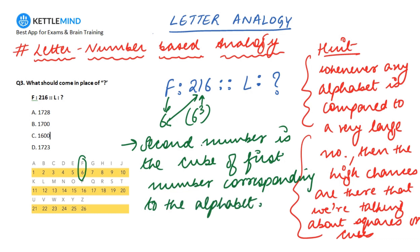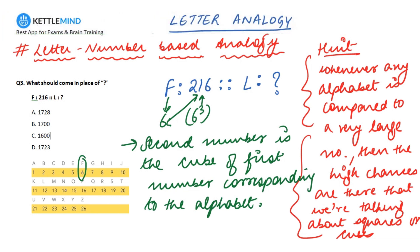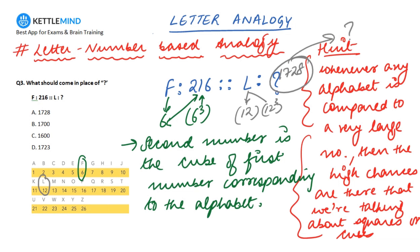Talking on the same lines, to evaluate the question mark I will cube the value corresponding to L. L has a value of 12. 12 squared is 144, and 144 multiplied by 12 gives 1728. So this question mark gets replaced with 1728. The first option also says the same thing, so the answer is correct.